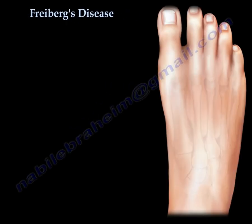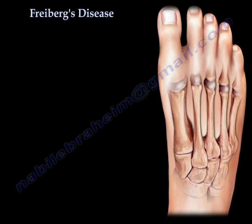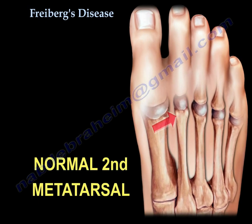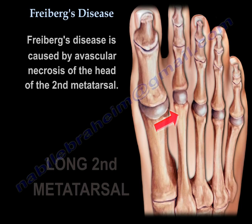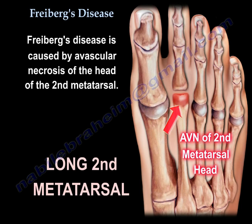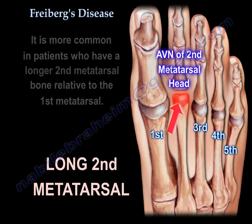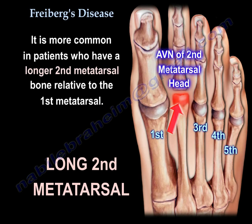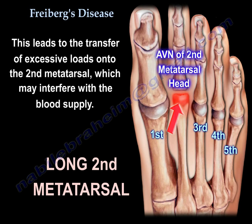Freiberg's disease is caused by avascular necrosis of the head of the second metatarsal. It is more common in patients who have a longer second metatarsal bone relative to the first metatarsal. This leads to the transfer of excessive loads onto the second metatarsal, which may interfere with the blood supply.